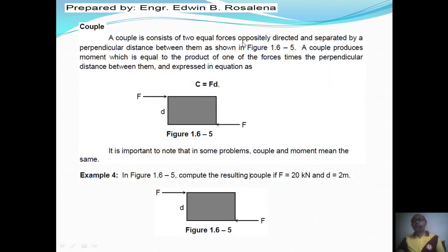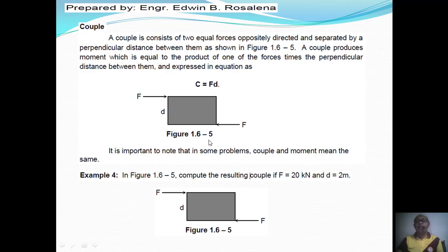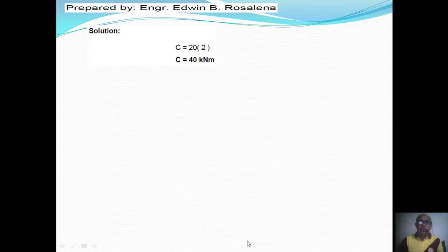A couple consists of two equal forces, oppositely directed and separated by a perpendicular distance between them. A couple produces a moment equal to the product of one force times the perpendicular distance between the two forces: C equals F times B. Take note that in some problems and some books, couple and moment mean the same thing. For example, a couple of 20 times 2 equals 40 kilonewton-meters.